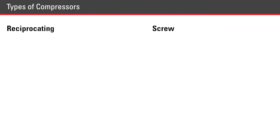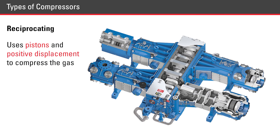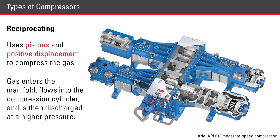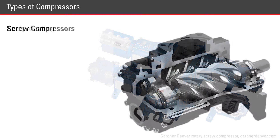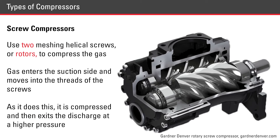There are two main types of compressors used in our industry: reciprocating and screw. Reciprocating uses pistons and positive displacement to compress the gas. Gas enters the manifold, flows into the compression cylinder, and then is discharged at a higher pressure. Screw compressors use two meshing helical screws or rotors to compress the gas. Gas enters the suction side and moves into the threads of the screws, where it is compressed and then exits the discharge at a higher pressure.